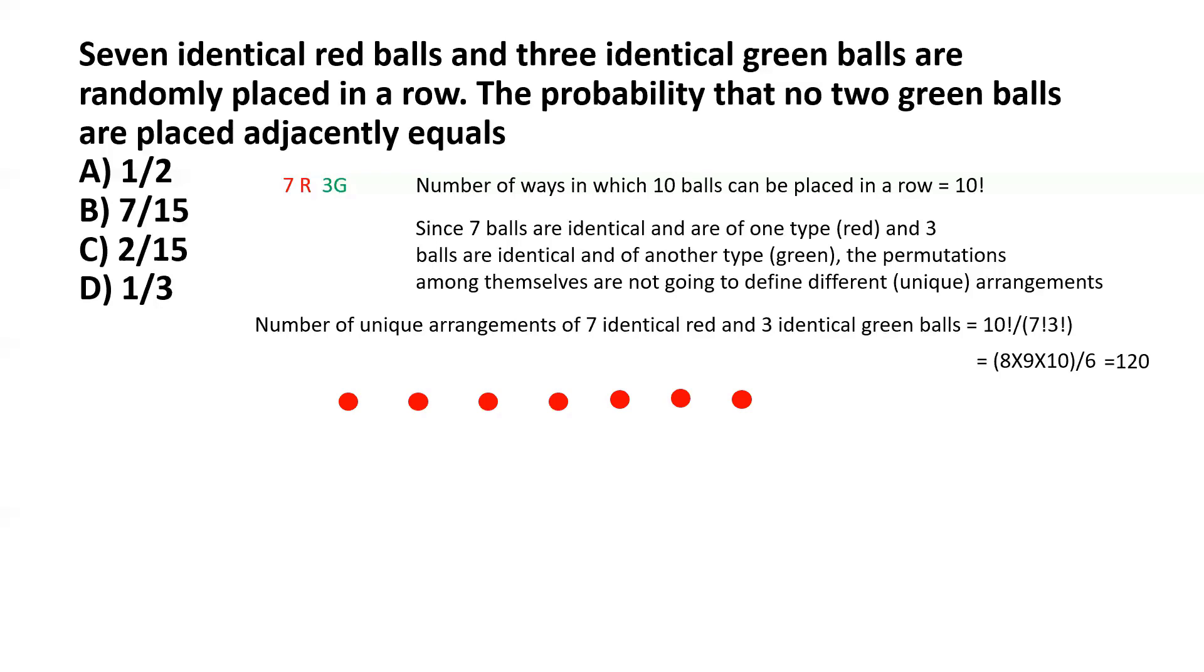The potential places for those three green balls are indicated by that green question mark. Either in between the two consecutive red balls or they can be at the end. If you really count the total number of such places, there are eight such places where each green ball could potentially be, so that no two of them are side by side.